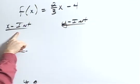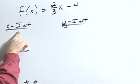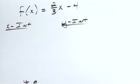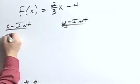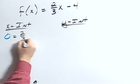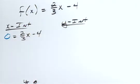Usually for the x-intercept, we would let y equal zero, but y being our output for a function is f of x. So I can let f of x equal zero, so zero equals two-thirds x minus four.